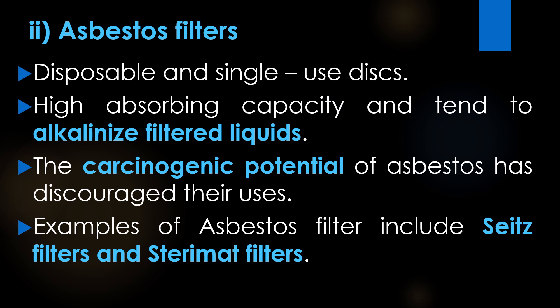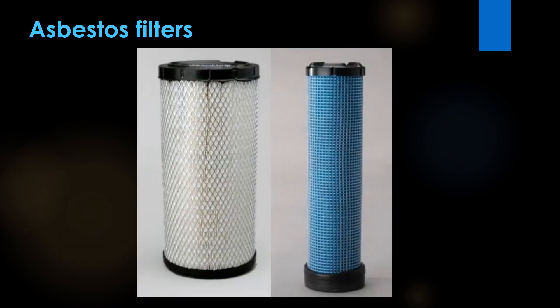The second filter is asbestos filters. Asbestos filters are disposable, single-use discs. The absorption capacity of the asbestos filter is high and it tends to alkalinize the filtered liquids. The carcinogenic potential of asbestos filters has discouraged their use. Examples include Seitz filters and Sterile filters. This is the image of asbestos filters.